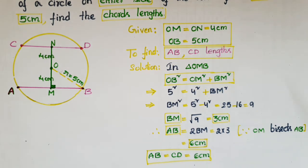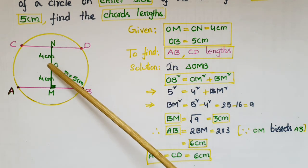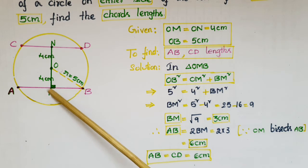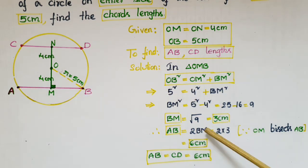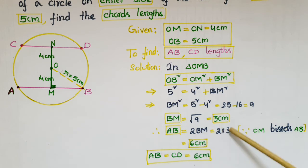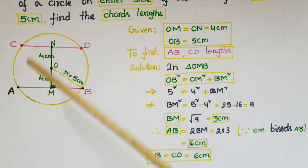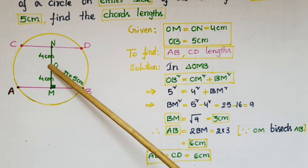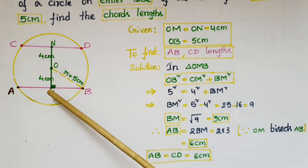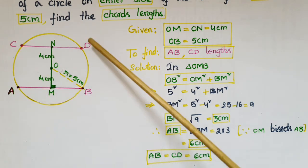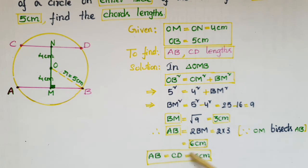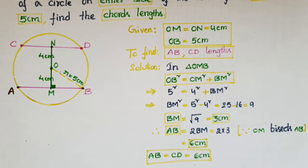We know that if a perpendicular line is drawn from the center to the chord, it bisects the chord, so AM is equal to BM. Therefore AB equals 2 times BM, that is 2 times 3, that is 6 centimeters. And since the distances from the center to the chords are equal, the chord lengths are equal, so AB equals CD equals 6 centimeters.